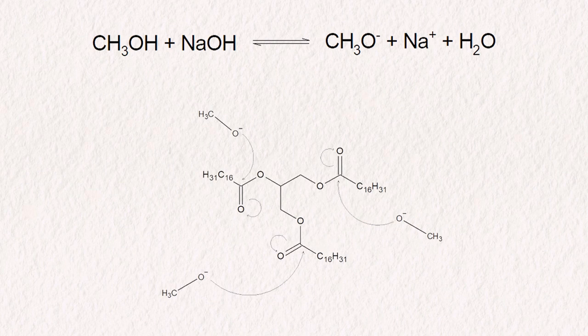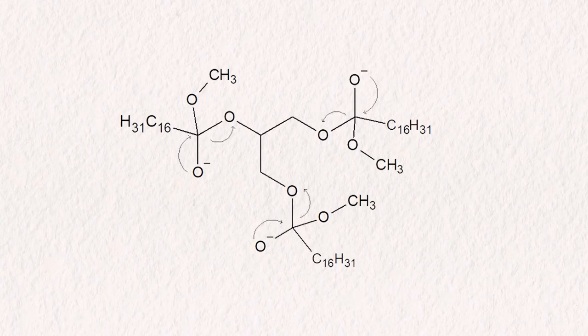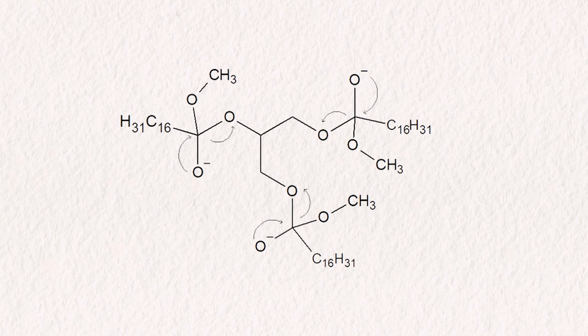In short, what is happening is that the methoxide ions attack the carbonyl carbon of the ester bond in the triglyceride, which causes the electron pair of one of the carbonyl double bonds to move onto the oxygen atom. Afterward, the oxygen atom doesn't want to keep those electrons on itself and forces the double bond to reform. But this forces one of the bonds on the carbon to break, since we cannot have a carbon with five bonds.